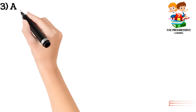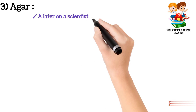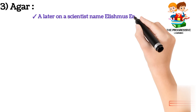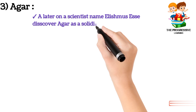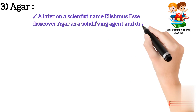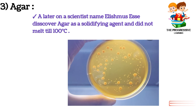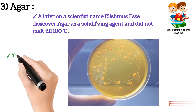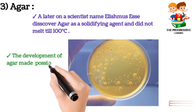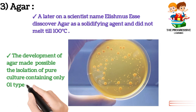The third medium is agar. A scientist named Lusmus S. discovered agar as a solidifying agent, because agar does not melt until 100 degrees centigrade. The development of agar made possible the isolation of pure culture containing only one type of bacterium.